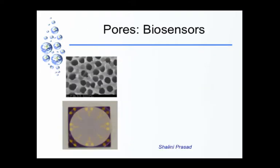Another thing we tried was using these pores along with electrodes to detect biomolecules. With different kinds of diseases, at the onset some proteins are released related to the disease itself. At the earliest stage, those proteins are in parts per billion concentration, and as the disease advances the proteins become more concentrated. Earlier you detect the disease, the earlier you can cure it — whether it is cancer or a heart-related disease — early stage detection is important to cure it completely.